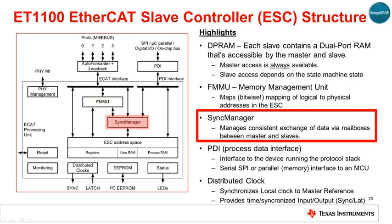The sync managers ensure consistent exchange of data between master and slave via a mailbox protocol, and they generate interrupts to inform both sides of changes. They use buffers located in the DP RAM memory space for exchanging data. Access to these buffers is controlled by hardware in the sync managers.